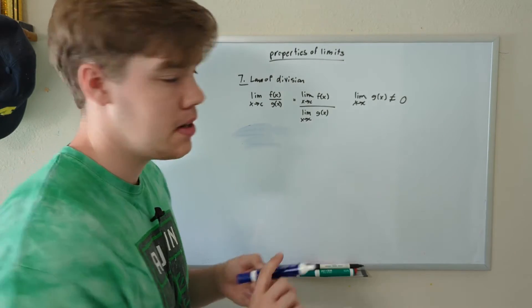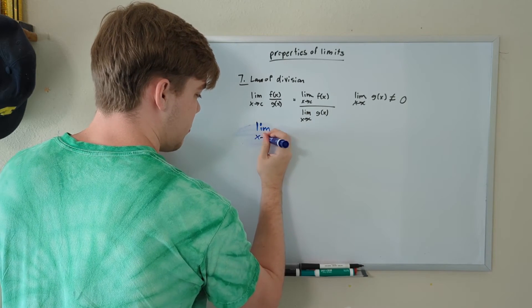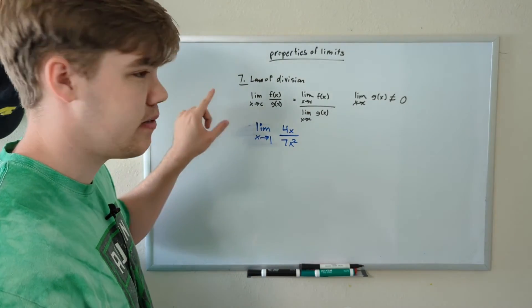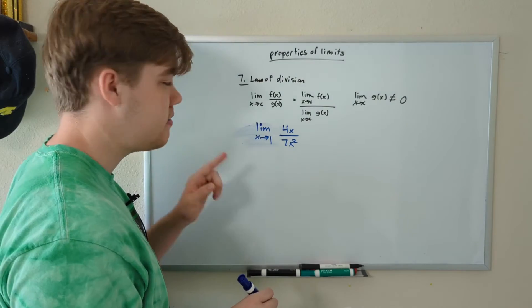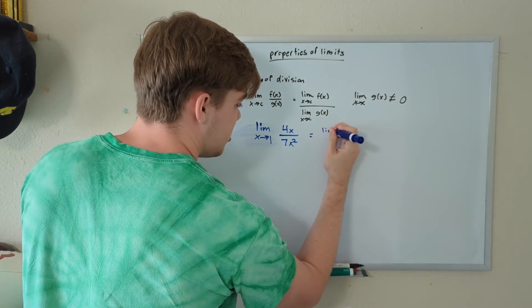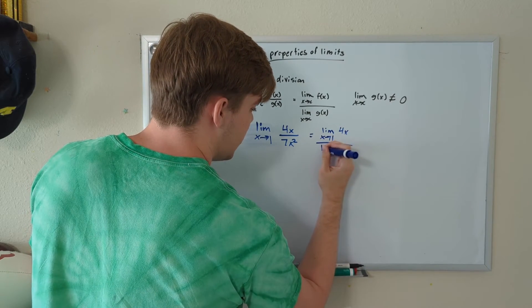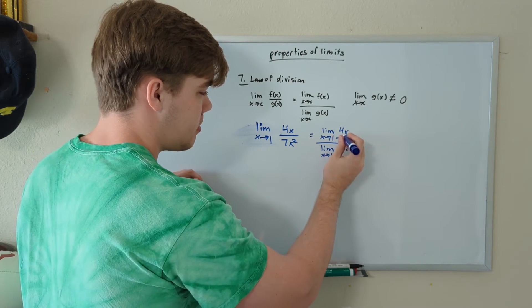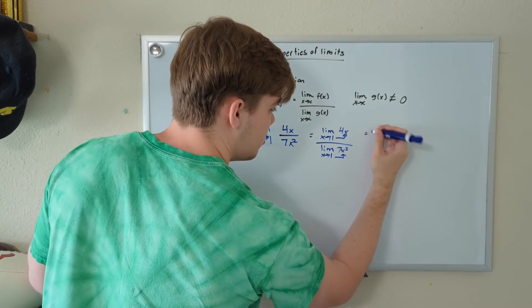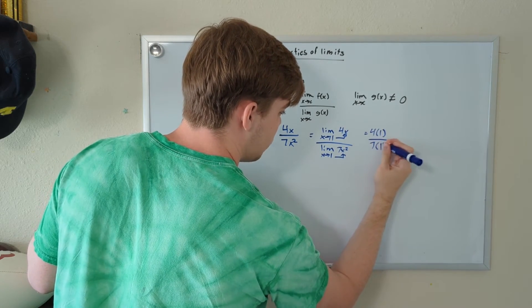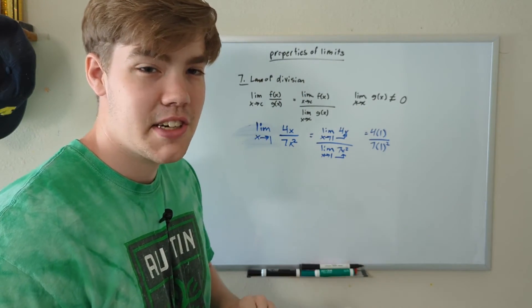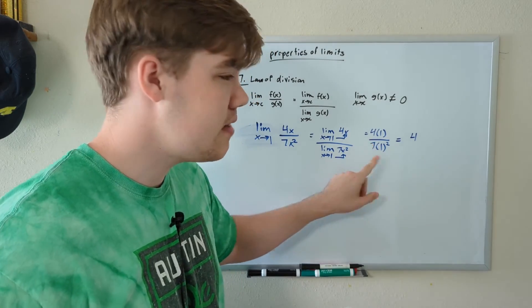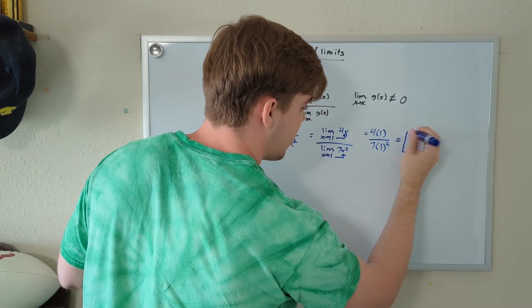Let's do an example. Let's find the limit as x approaches 1 of 4x divided by 7x squared. We split our two functions by their limits: the limit as x approaches 1 of 4x, divided by the limit as x approaches 1 of 7x squared. Plugging in 1 for x: 4 times 1 in the numerator, and 7 times 1 squared in the denominator. 4 times 1 is 4, 1 squared is 1, and 1 times 7 is 7. So the limit of this problem is 4 sevenths.